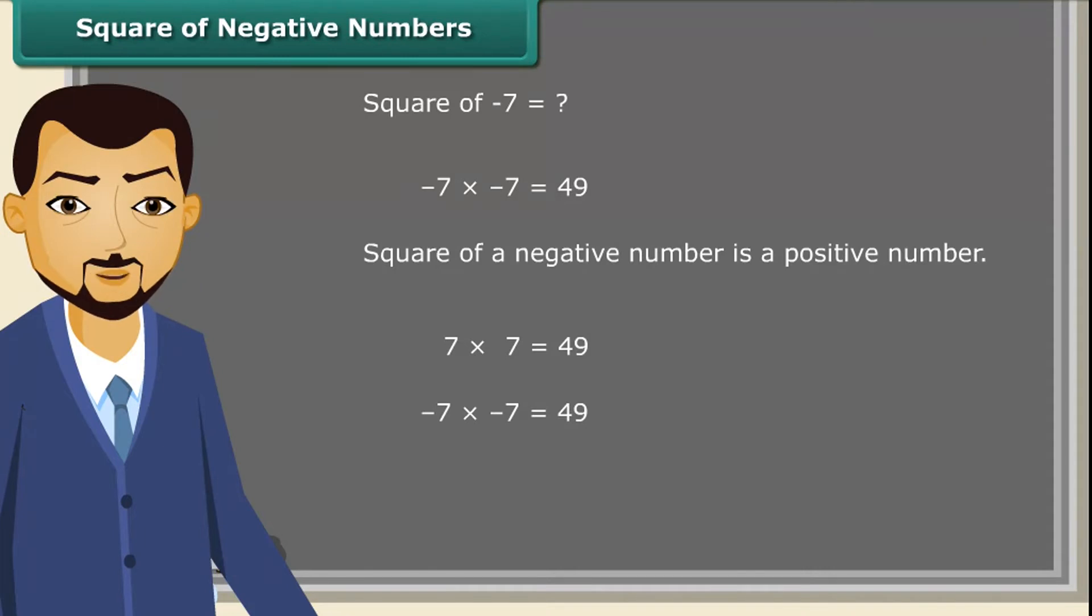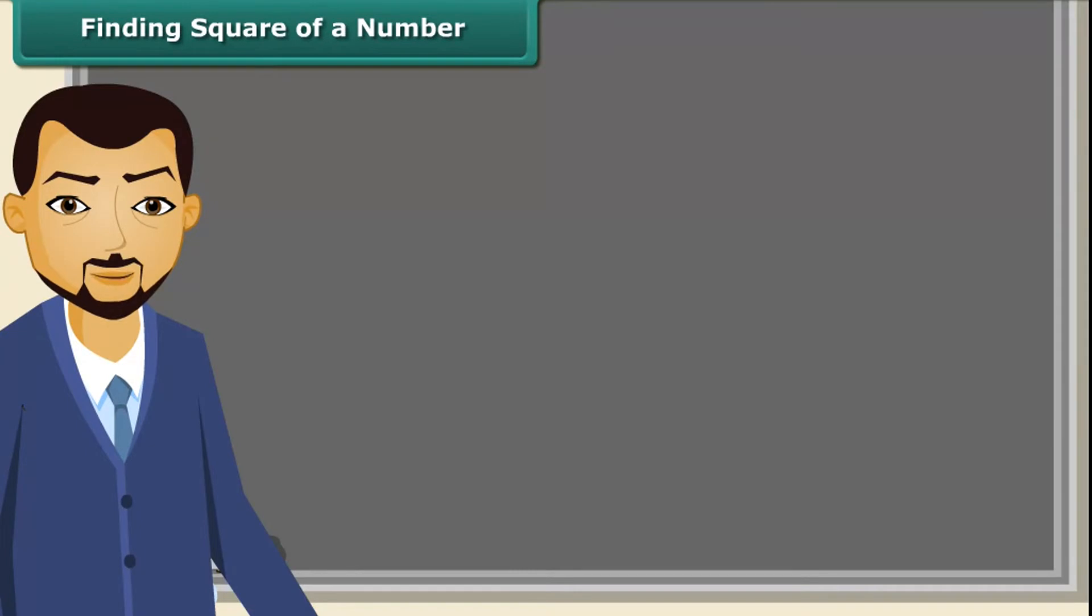Let us know about square roots now. We can easily find the squares of small numbers like 7, 4, 5, etc. But is it easy to find the square of 27 so quickly? Let us find how we may find the square of 27.